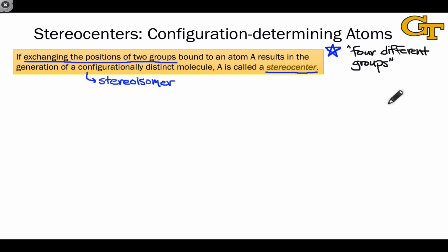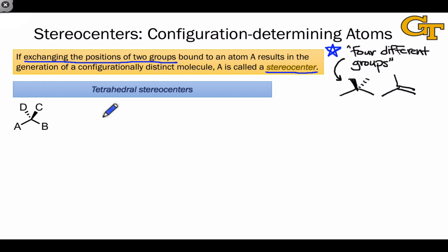And the nice thing about this as well is it says nothing about the geometry of the atom. It might be tetrahedral or it might be trigonal planar. Strictly speaking, the stereocenter term isn't defined with reference to any particular geometry.